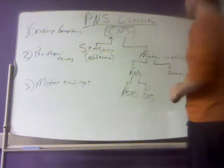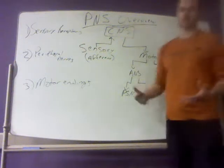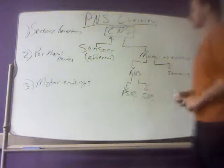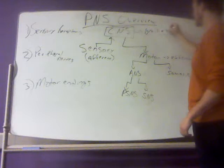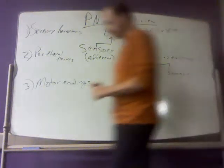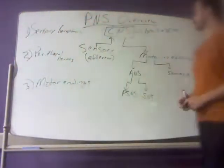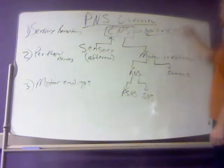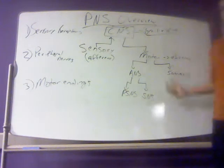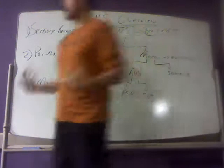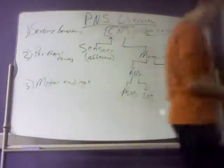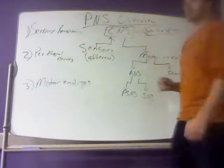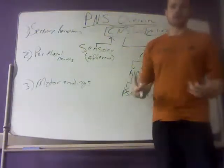In other videos we've discussed the divisions of the nervous system — the central nervous system and the peripheral nervous system. The CNS consists of the brain and spinal cord, which you can think of as the processing aspect of our body. This is where we unconsciously and consciously process information about the world — our inside world, the internal aspects of our body, and also the outside world. Basically, the central nervous system is taking information about the world around us and inside of us and trying to make sense of it.